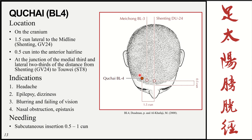Bladder 4 is 1.5 cun lateral to the midline and half a cun into the anterior hairline — it lies in the medial third of the distance from the Du meridian to Stomach 8. Indications include headache, epilepsy, dizziness, blurring and failing of vision, nasal obstruction, and epistaxis — all local conditions near this area. Insertion is subcutaneous: aim posteriorly for headaches at the back of the head, or anteriorly for the eyes and nose. Needling depth is 0.5 to 1 cun.